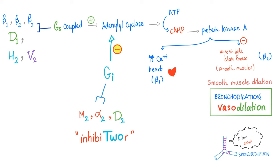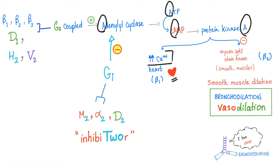Gs-coupled receptors stimulate adenylate cyclase. ATP converts to cyclic AMP. Cyclic AMP activates protein kinase A — everything here is A: adenylate cyclase, ATP, cyclic AMP, protein kinase A. What happens next depends on the tissue. If you're talking about the heart, we will increase calcium in the heart, and this will increase heart rate and contractility, especially contractility.